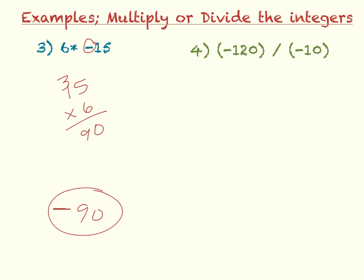And the next one, 4 is negative 120 divided by negative 10. It might also be written as divided by, so I'm going to look at my negative signs. There are two of them, so that's going to make my final answer positive. And then I'm going to divide 120 divided by 10.